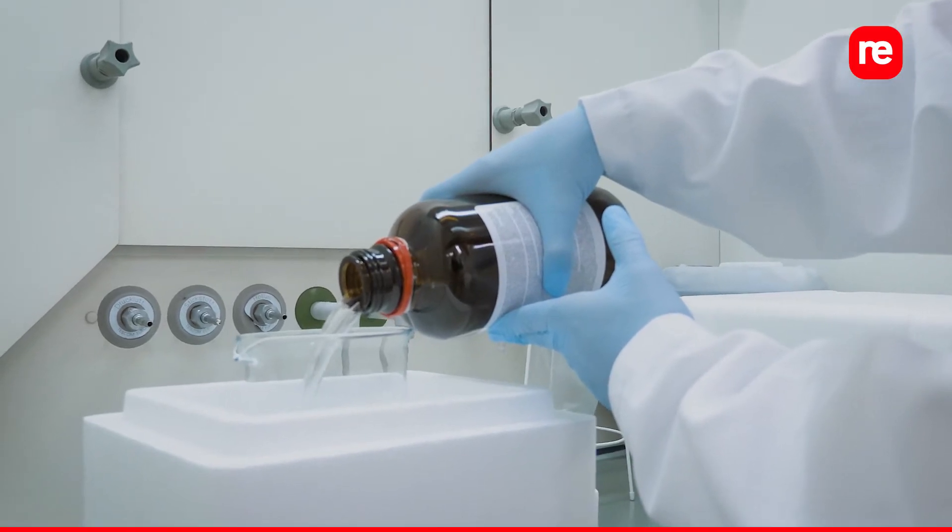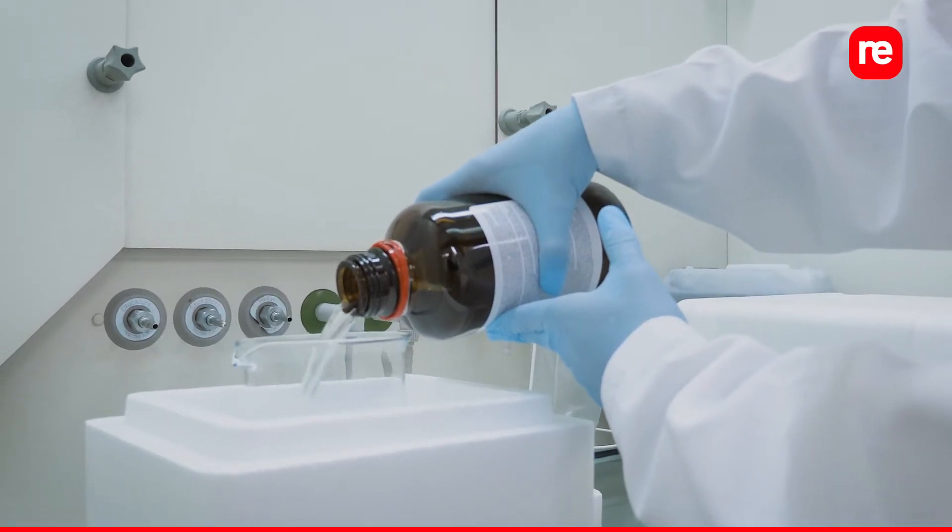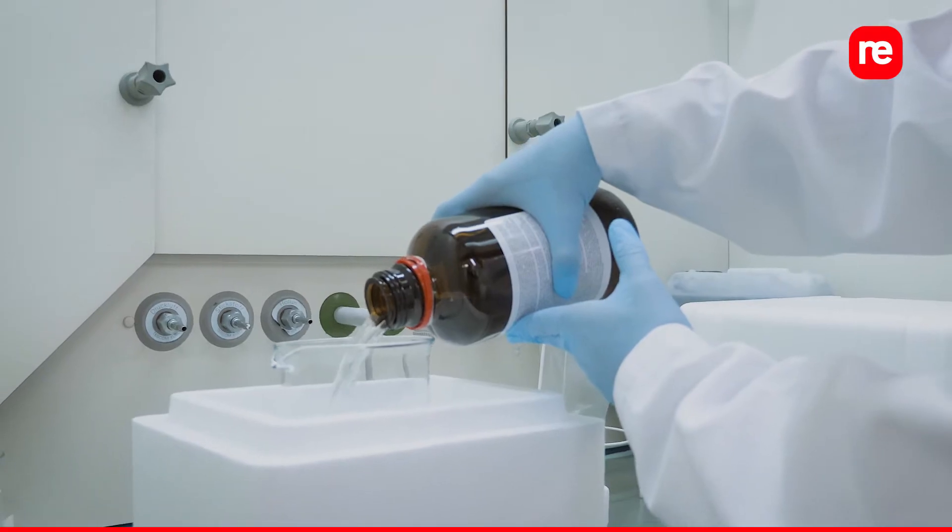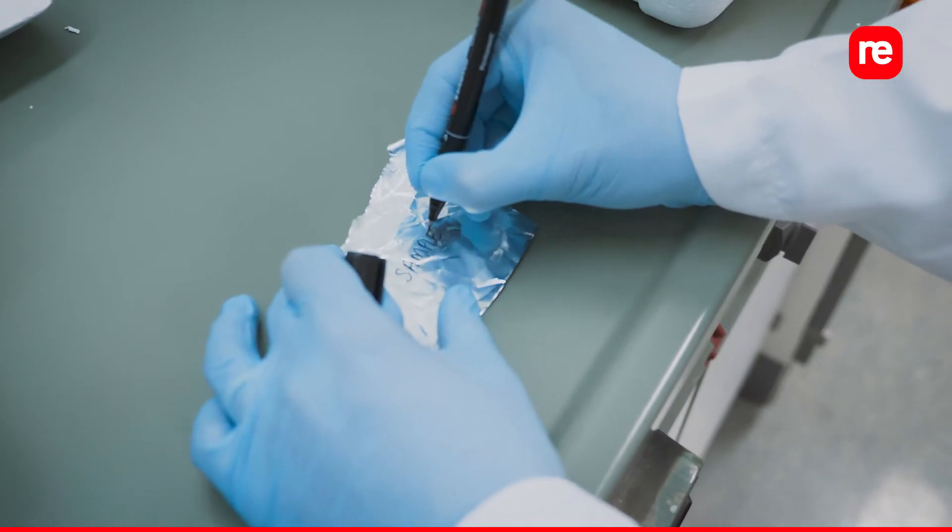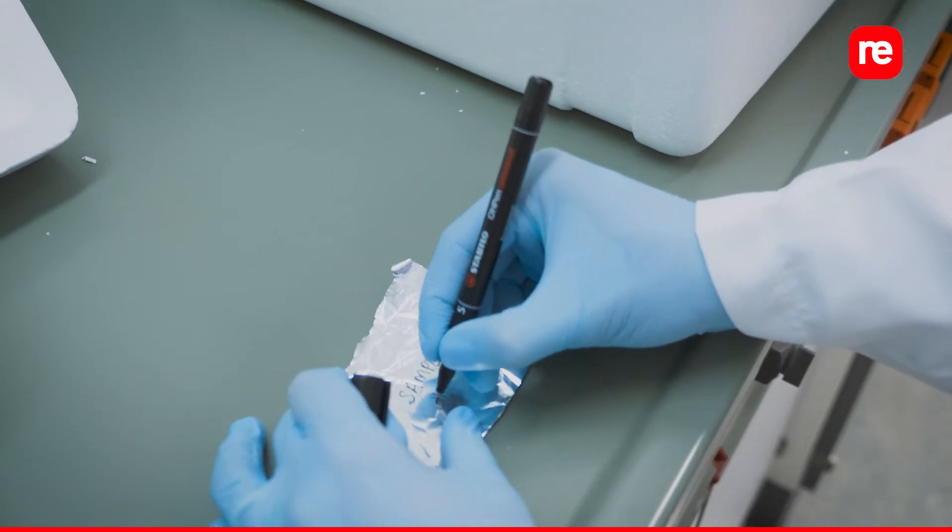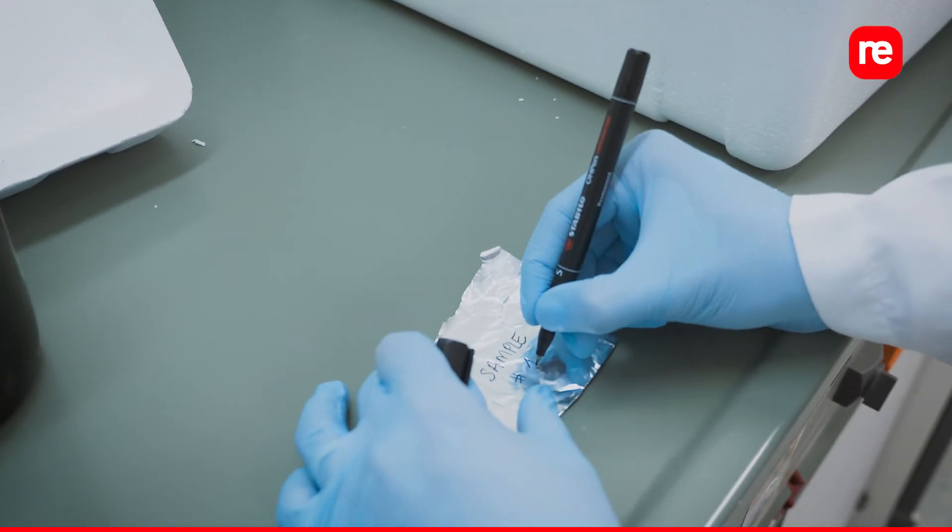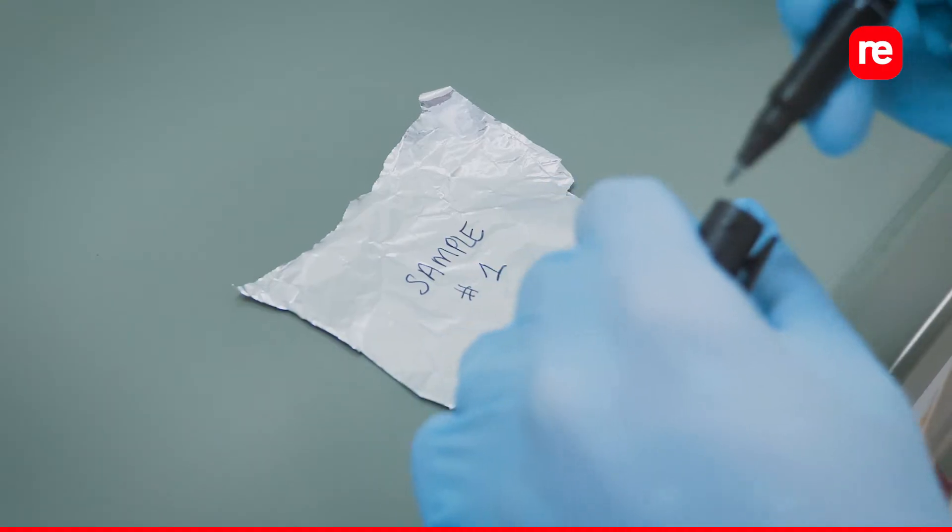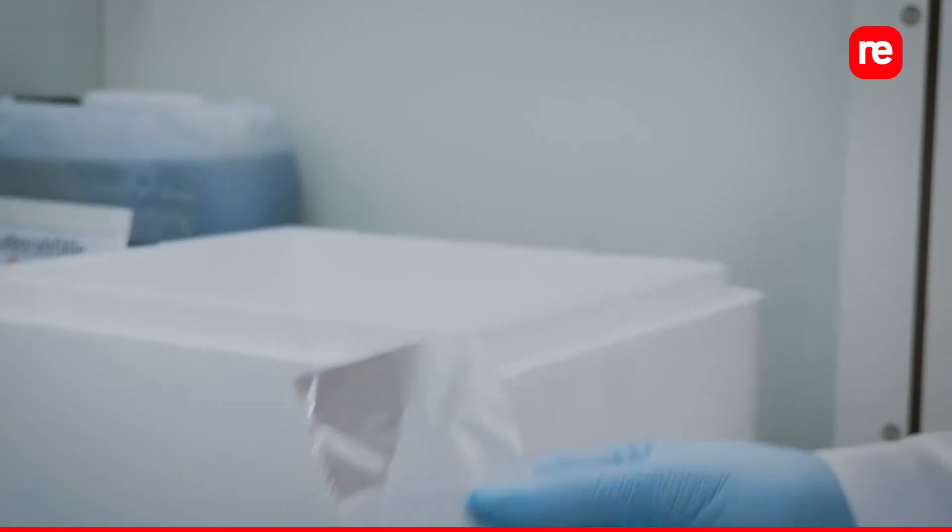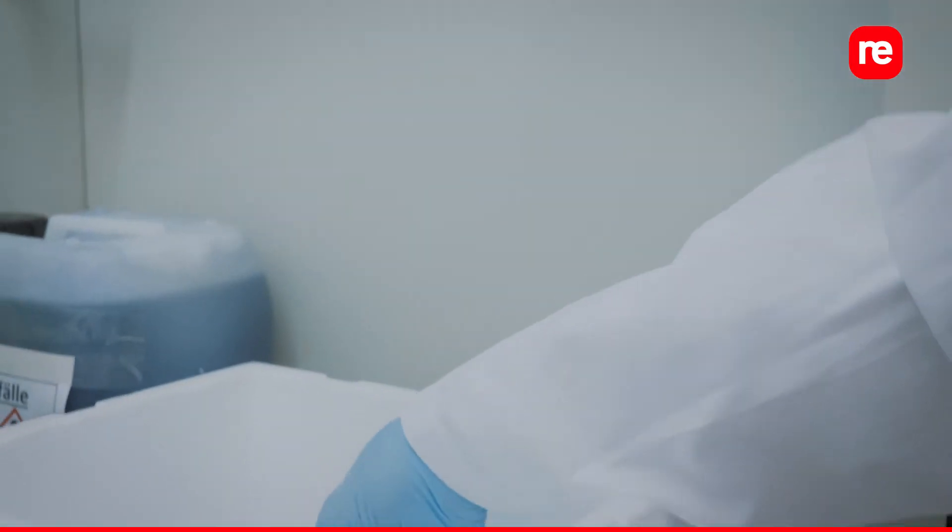Fill the bottom of the beaker with isopentane to around 3 or 4 centimeters high. Meanwhile, prepare pieces of aluminum foil and label them with sample information. Keep them cold on dry ice. These will be needed to store the samples after freezing.